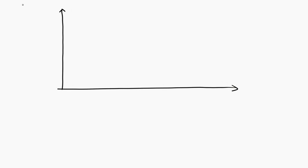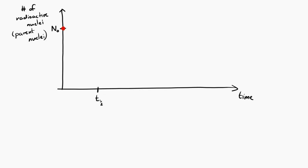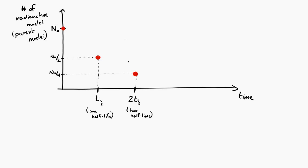We can make a graph of this. Let's put time on the horizontal axis and the number of radioactive parent nuclei on the vertical axis. If we start out with some number N₀, and we wait for one half-life, half of those nuclei will decay, leaving N₀/2. If we wait one more half-life — so two half-lives have passed — each half-life sees half of the remaining nuclei decay. After two half-lives we're left with one half of one half, or one fourth of the original number.